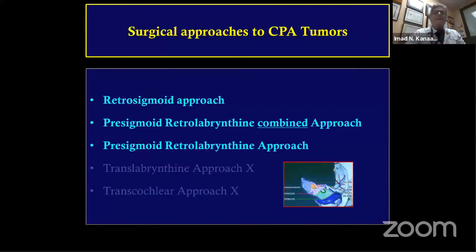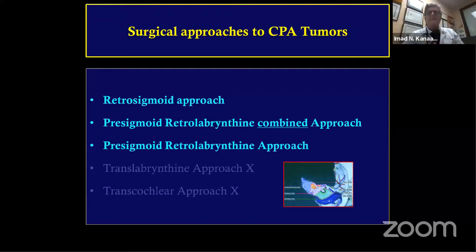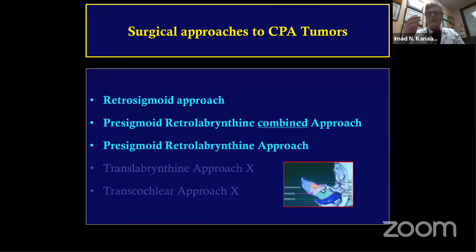The different approaches include the retrosigmoid, pre-sigmoid retrolab, and the pre-sigmoid retrolab combined. I left the translabyrinthine and transcochlear out because as neurosurgeons, these are not hearing-saving procedures and we typically collaborate with ENT colleagues for such procedures.